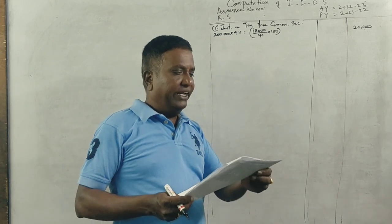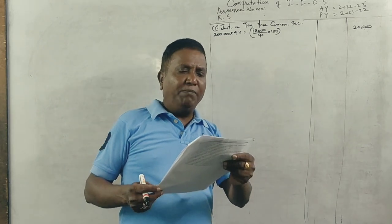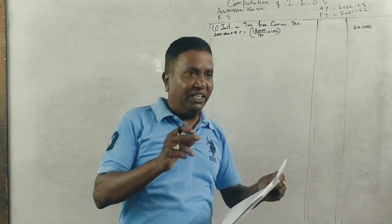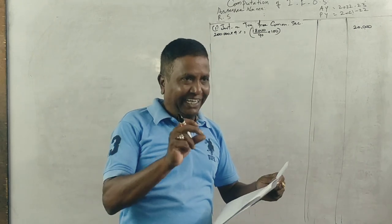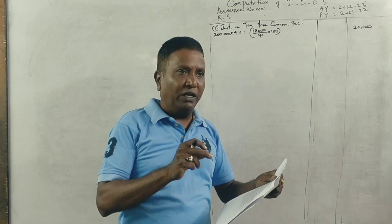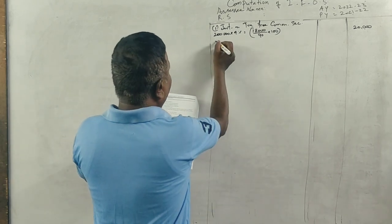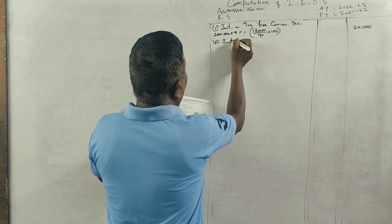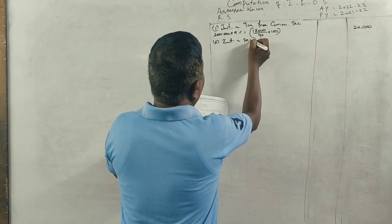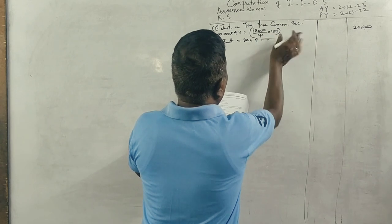Next, 1 lakh 8% debentures of SRM limited. So interest on debentures of SRM limited is 1 lakh into 8%, which equals 8,000. This is very clear.